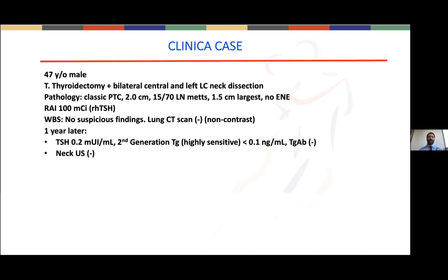I would like to start with a clinical case. This is a 46-year-old male who had a total thyroidectomy plus a central and laterocervical neck dissection. The pathology report showed a classic papillary thyrocarcinoma of two centimeters. He had 15 lymph node metastases, 15 millimeters the largest of them, with no extra nodal extension. The patient received 100 millicuries of radioactive iodine, and the whole body scan post-therapy showed no suspicious findings. Also, a CT scan of the lung without contrast did not show any suspicious